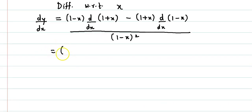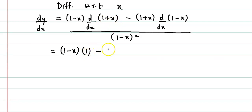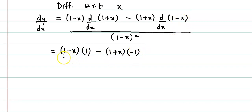We get 1 minus x into — derivative of 1 is 0 and derivative of x is 1, so 0 plus 1 gives us 1 — minus 1 plus x into — derivative of 1 minus x: derivative of 1 is 0 and derivative of x is 1, so 0 minus 1, that's negative 1 — divided by 1 minus x the whole square.